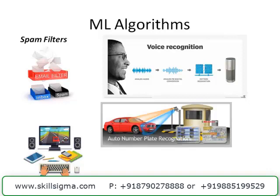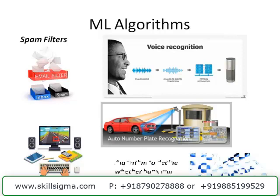Auto number plate recognition: many clubs and hotels use stickers on automobiles and they get automatically scanned and gates open. At airports this also happens. Then there is an algorithm to decide whether a bank will give you a loan or not. Every bank's home page has a loan eligibility check - we just feed in our information. We don't have to go and visit banks, and now the machine is doing that task very conveniently.